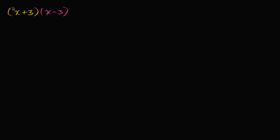First, we could take this entire yellow x plus three and multiply it times each of these two terms. We can multiply it times this x, so that's going to be x times x plus three. And then we are going to multiply it times negative three, so we write minus three times x plus three.